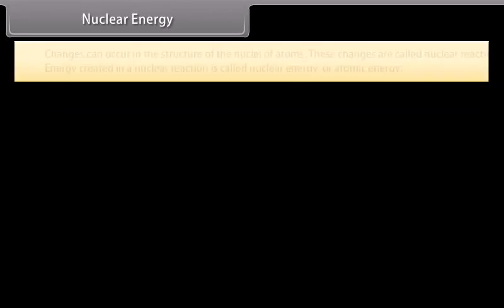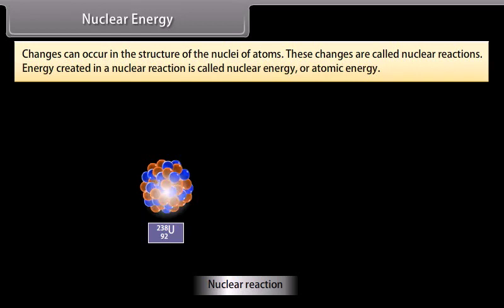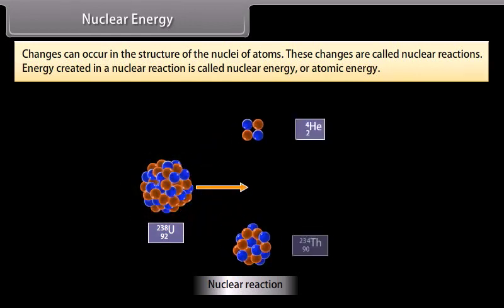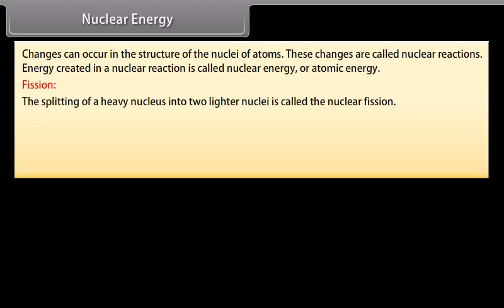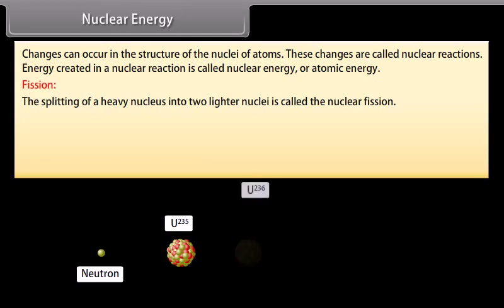Nuclear energy: changes can occur in the structure of the nuclei of atoms; these changes are called nuclear reactions. Energy created in a nuclear reaction is called nuclear energy or atomic energy. Fission: the splitting of a heavy nucleus into two lighter nuclei is called nuclear fission. When a slow neutron strikes a Uranium-235 nucleus, it is absorbed and an unstable isotope U-236 is formed, which immediately breaks into two fragments emitting two or three neutrons with release of enormous energy.